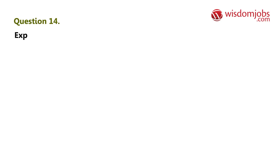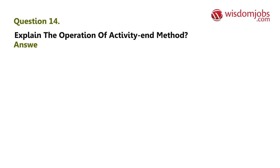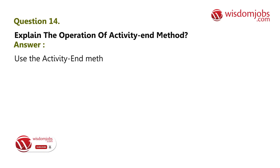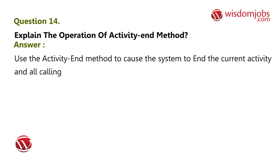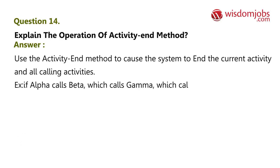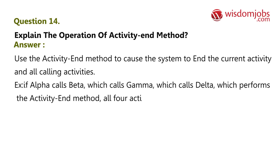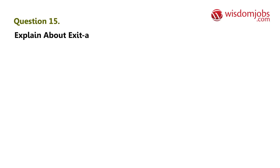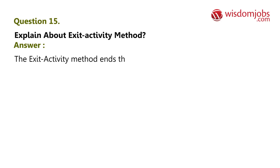Question 14: Explain the operation of activity-and-method. Answer: Use the activity-and-method to cause the system to end the current activity and all calling activities. For example, if Alpha calls Beta, which calls Gamma, which calls Delta, and Delta performs the activity-and-method, all four activities are ended. Question 15: Explain the exit activity method. Answer: The exit activity method ends the current activity and returns control to the calling activity.